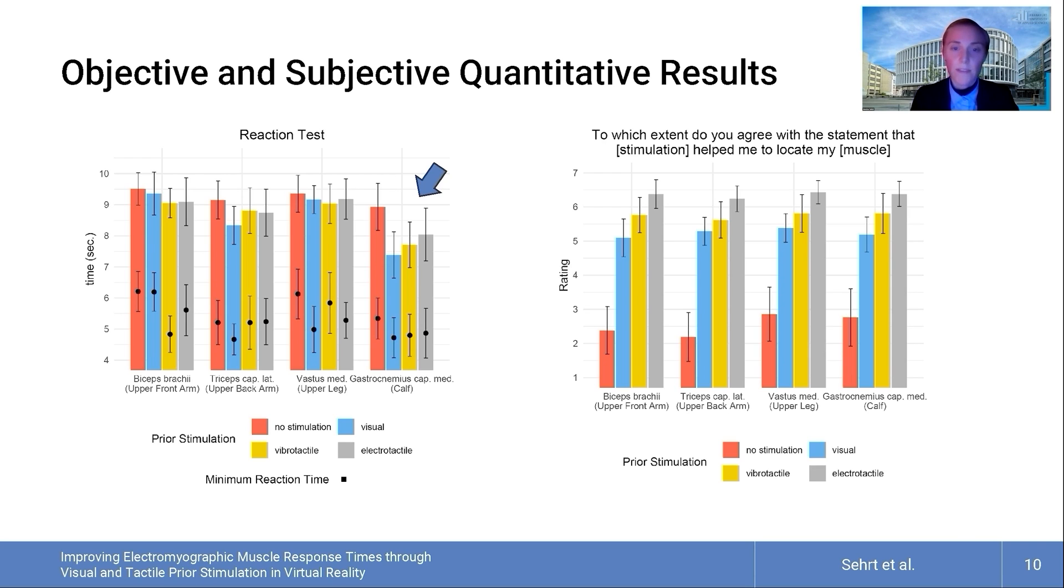Surprisingly, the calf muscle showed the fastest mean reaction time among the muscles tested, indicated by lower bars in the left graph, suggesting a quicker response to stimuli.